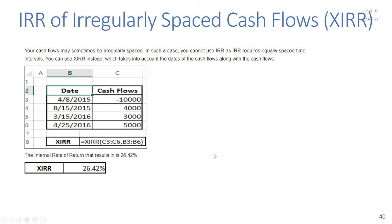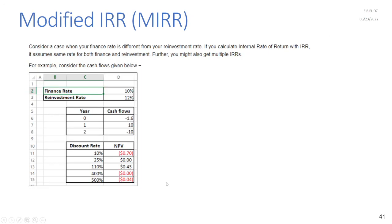For irregularly spaced cash flows you cannot use IRR, which requires equally spaced time intervals. Use XIRR instead, which takes dates into account along with the cash flows. XIRR(C3:C6, B3:B6) gives an IRR of 26.42% for the irregularly spaced cash flows.